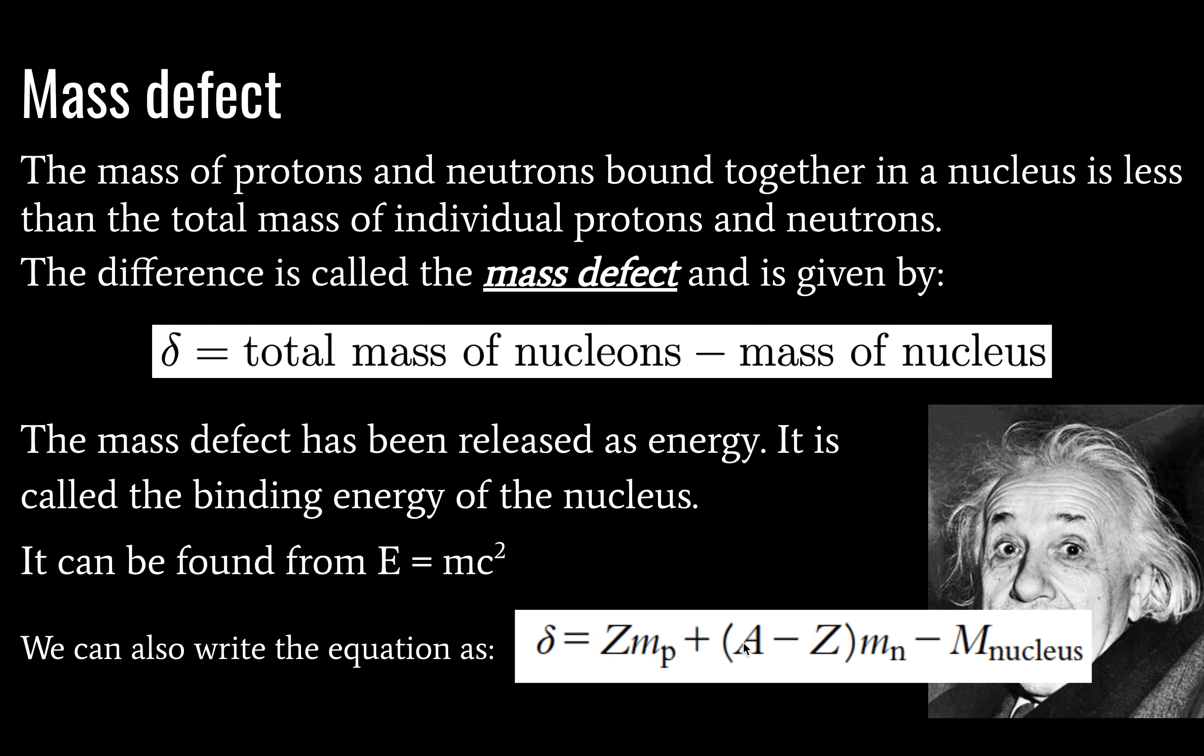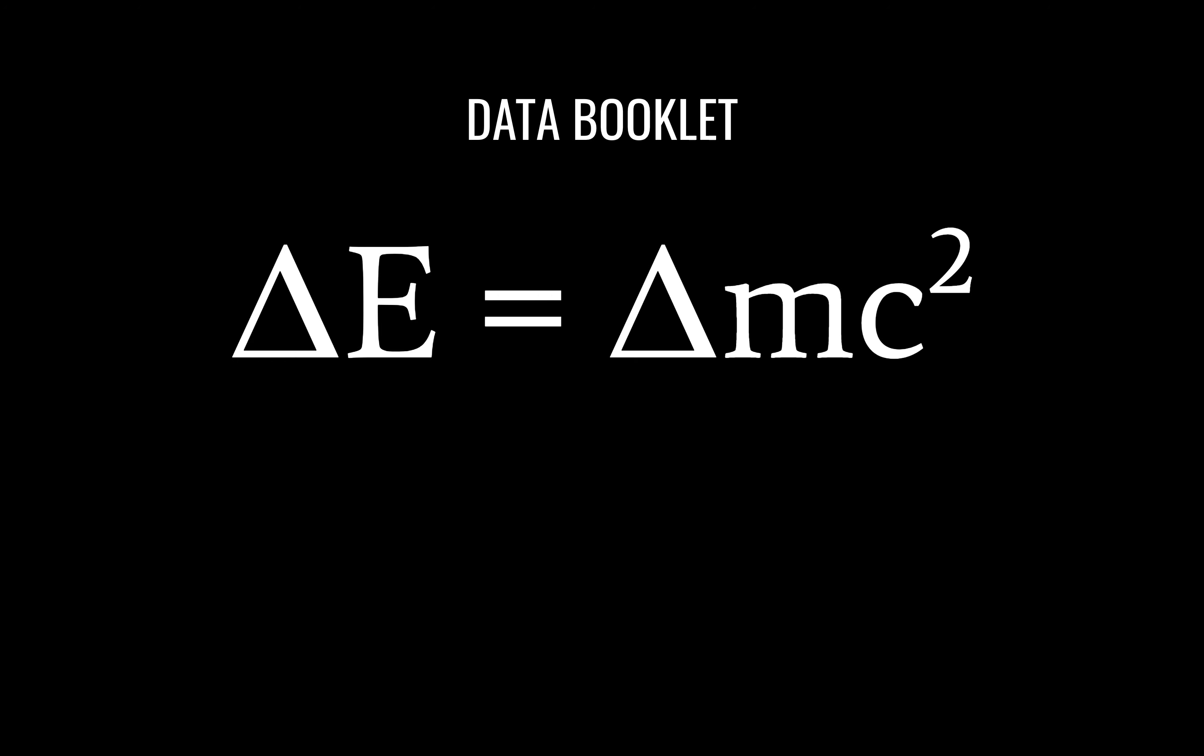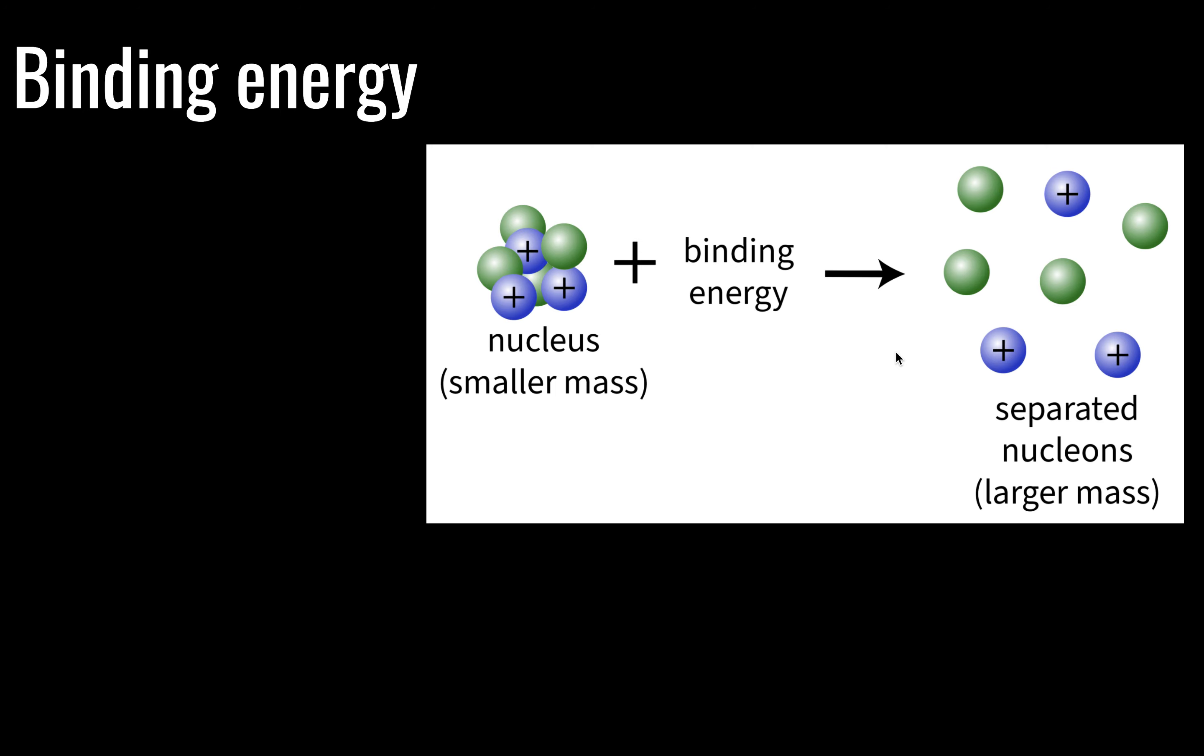You can write the equation for mass defect as z times the mass of a proton, so this is your proton number, plus a minus z times the mass of the neutron. And recall that a is the atomic mass number. This again is the number of protons. And from this all we subtract the mass of the nucleus. Sorry, this should be neutron mass. My bad. So we have number of protons, mass of protons here, we have the mass of the neutrons here, and from all of this we subtract the mass of the nucleus. That gives us mass defect. And this is in the data booklet. Change in energy is equal to change in mass times the velocity of light squared, which is also in your data booklet. It is about three times ten to the eight meters per second.